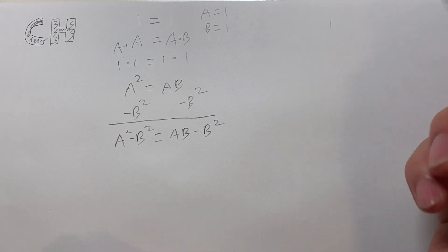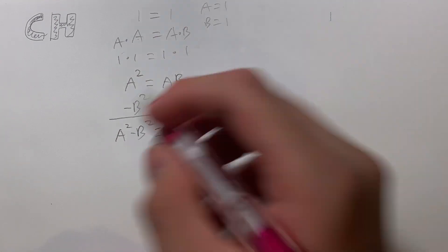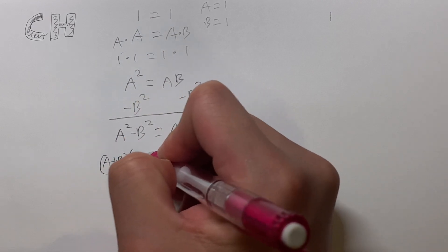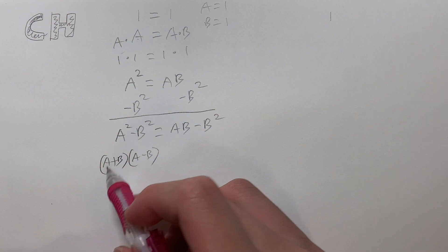Next, I'm going to factor out. So A squared minus B squared is known as the difference of squares. So this is going to give us A plus B times A minus B. It's the difference of squares, so it's going to factor out.